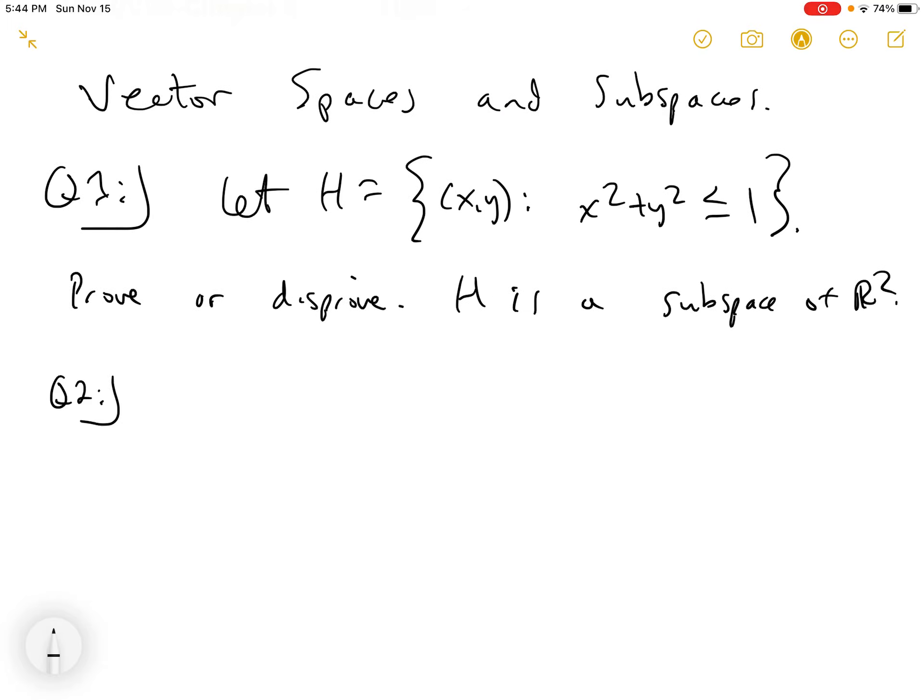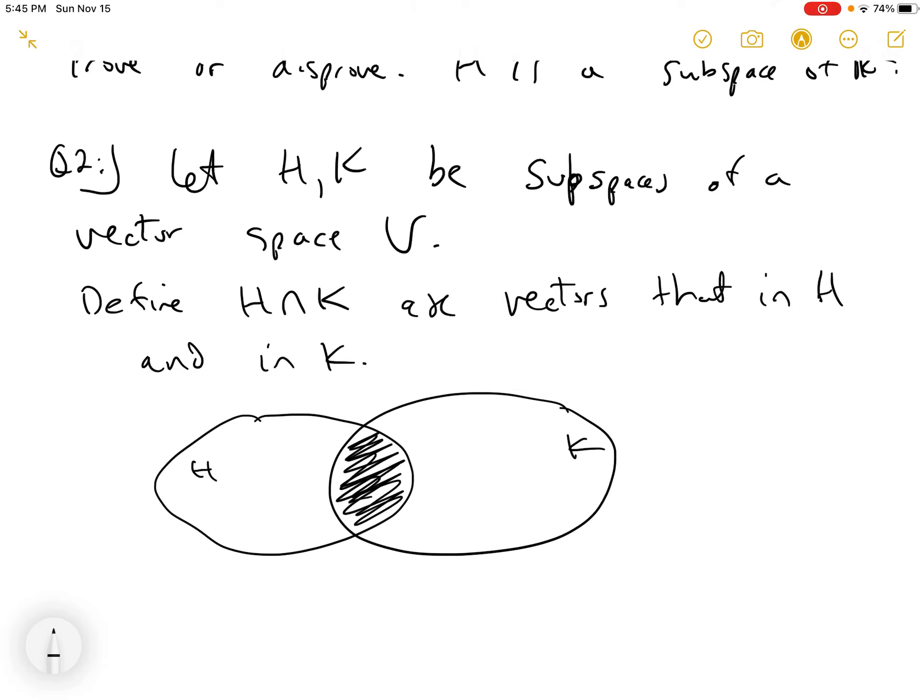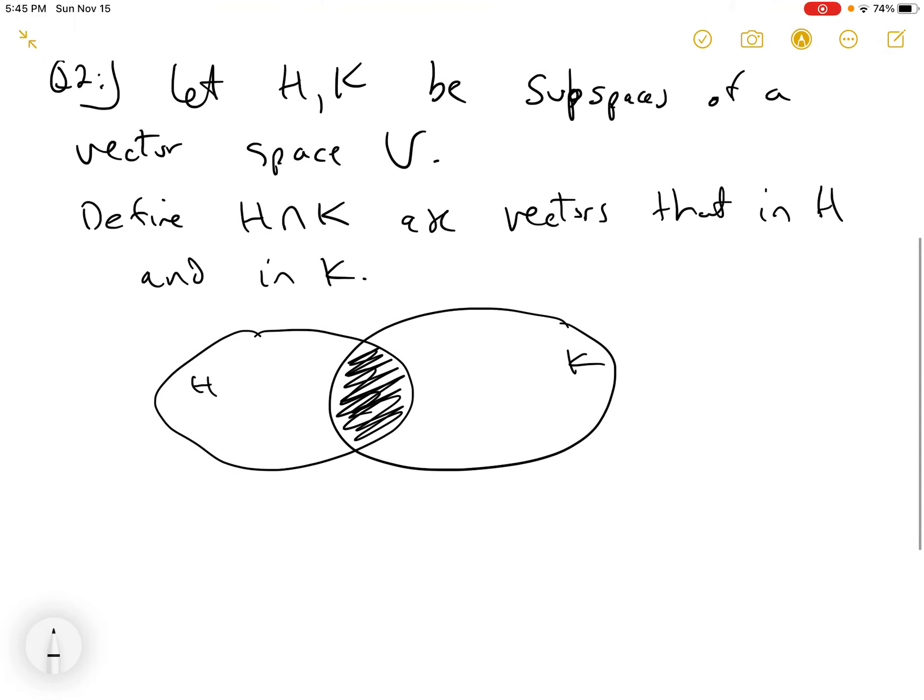Question two. One of my favorites. So we're going to let H and K be subspaces. What we're going to do is define the intersection of H and K as vectors that are in H and in K. So they're in the intersection of the two. If you think of a Venn diagram, here's H, and here's K. And H intersect K is this whole thing here, the vectors that are common to both.